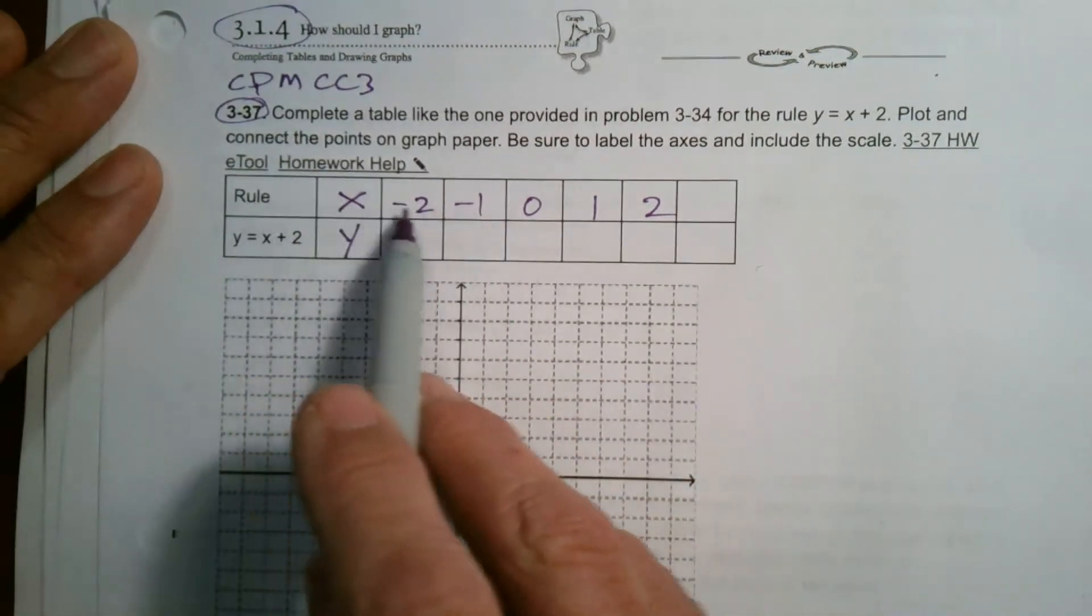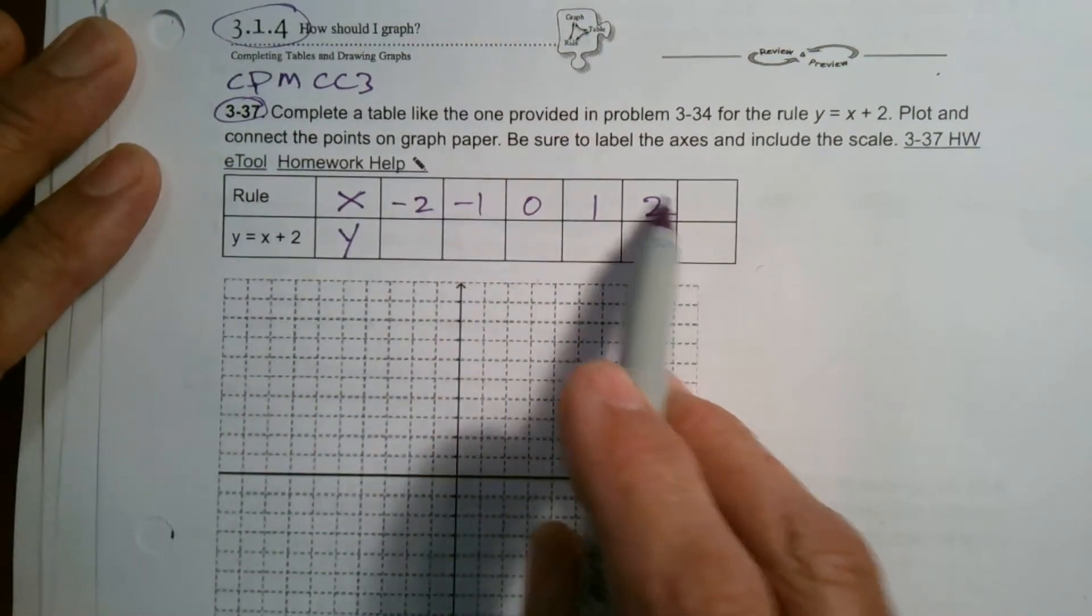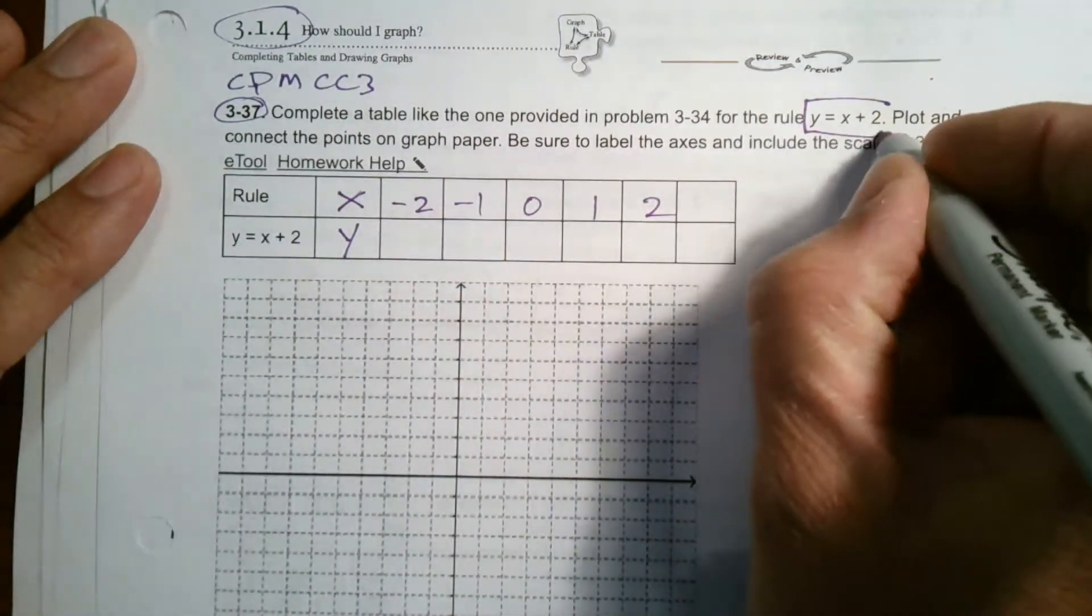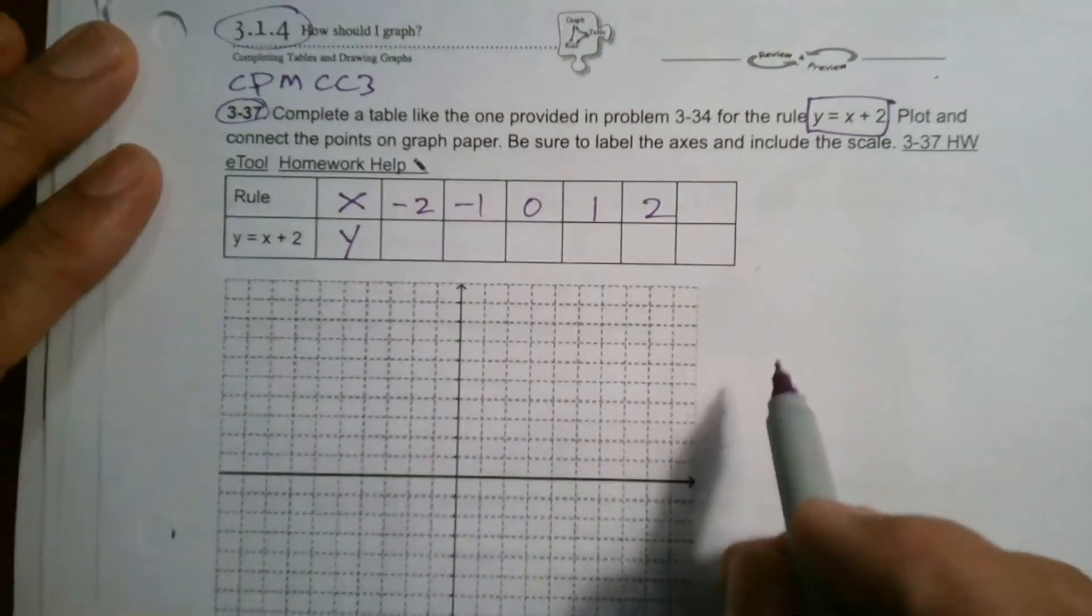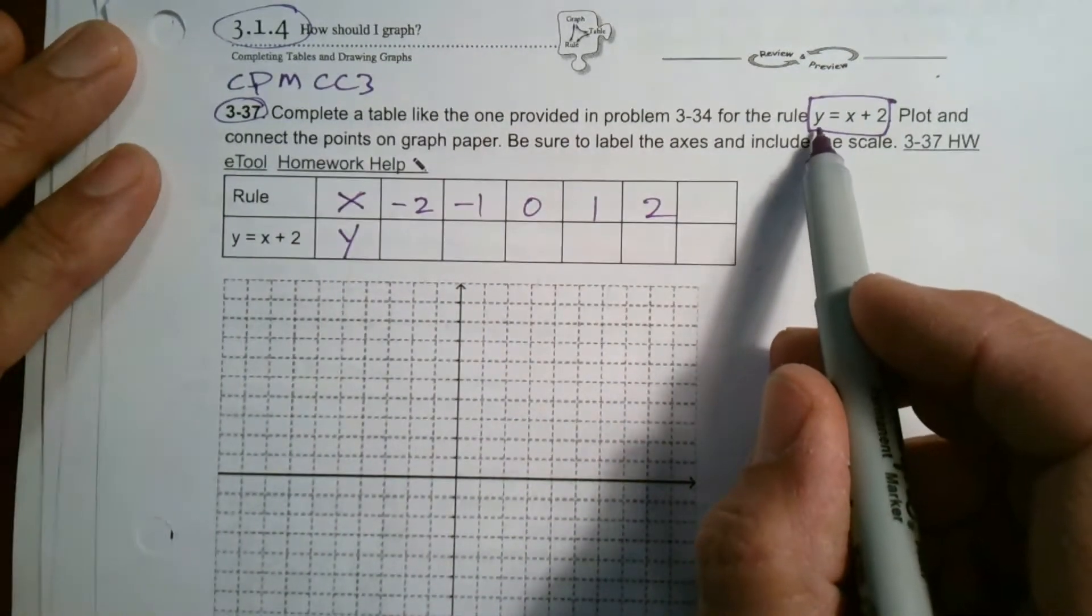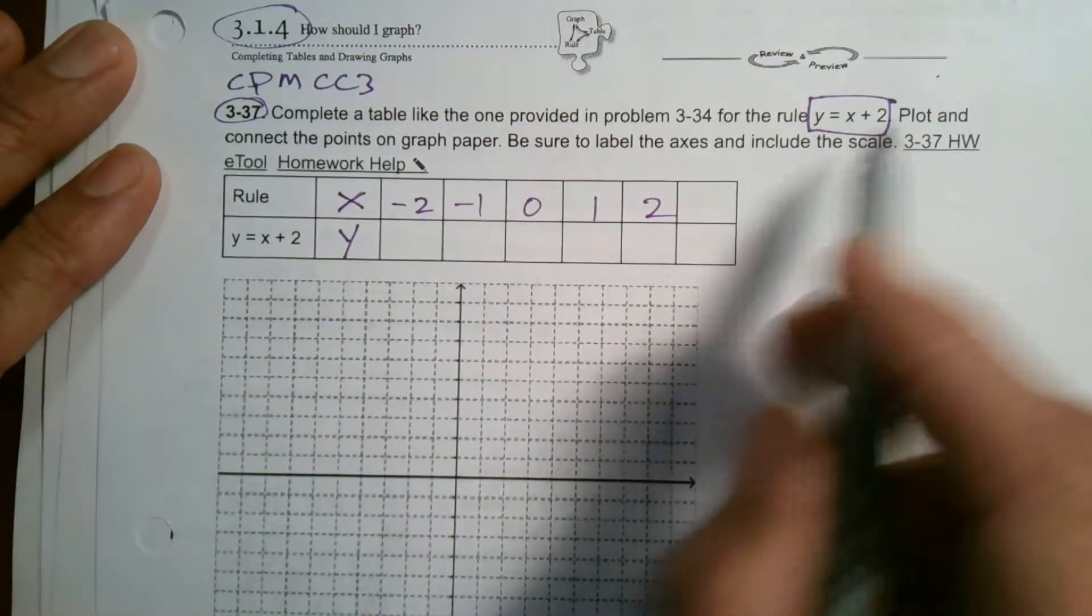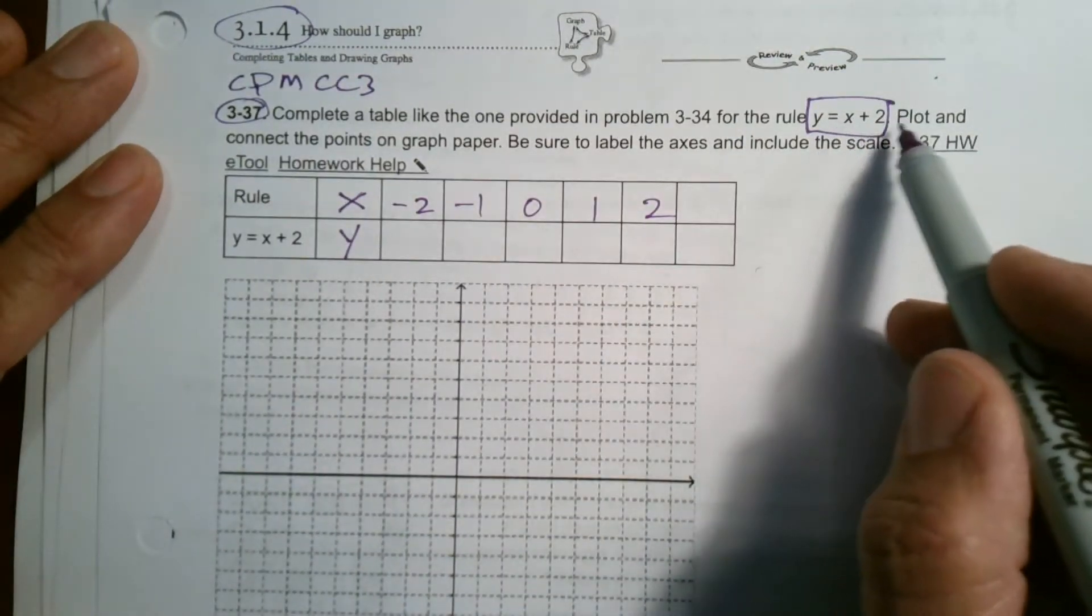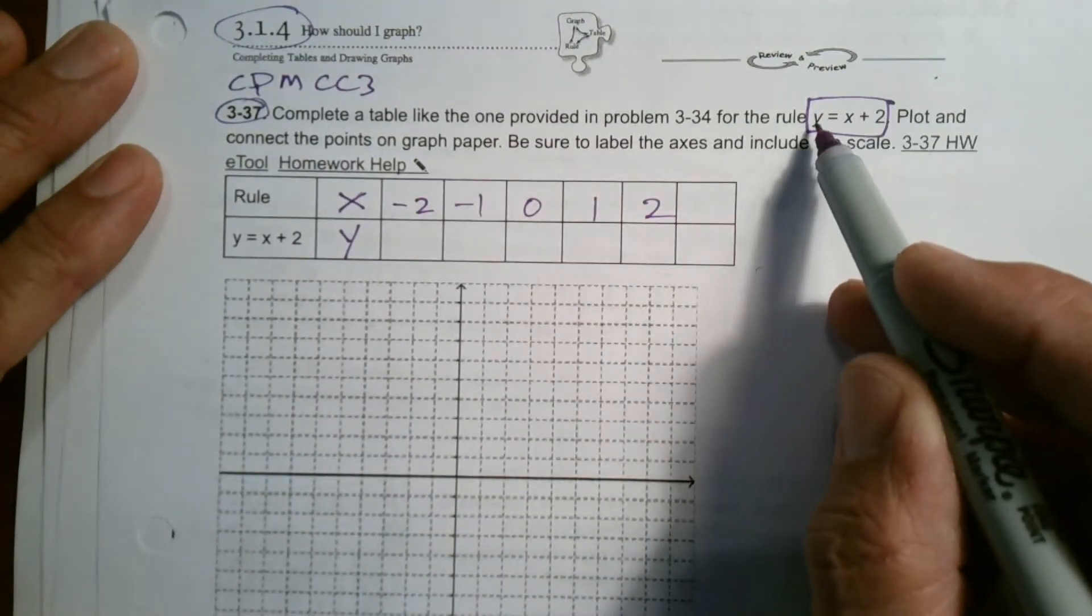So when you choose your values for your x, then take those values and plug them into the equation that they want us to plot on graph paper. So this is our rule, y equals x plus 2. For every x value you put into that equation, do the math to find the corresponding y value.